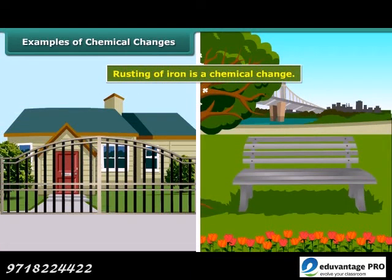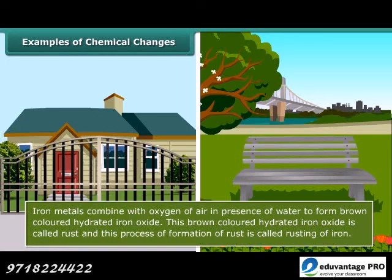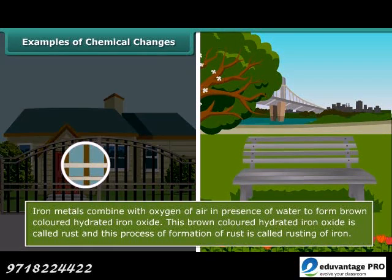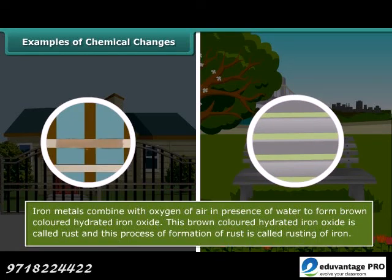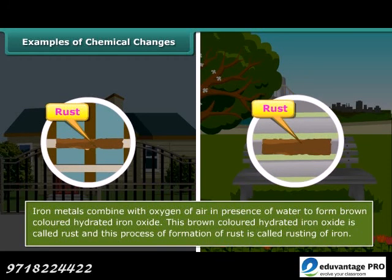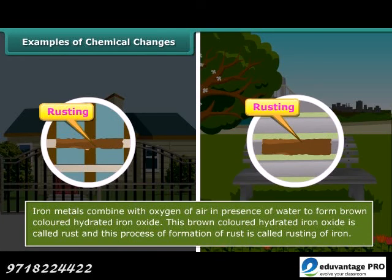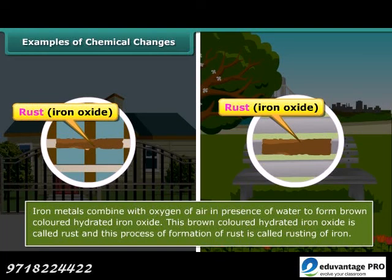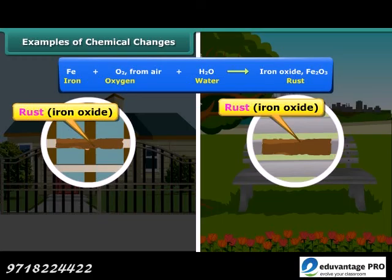You can see many chemical changes in your daily life. Have you seen an iron gate or iron bench in a garden with a brownish film on it? This brownish film is called rust, and the process of its formation is called rusting. The chemical name of rust is iron oxide. Rusting occurs in the presence of oxygen and moisture.